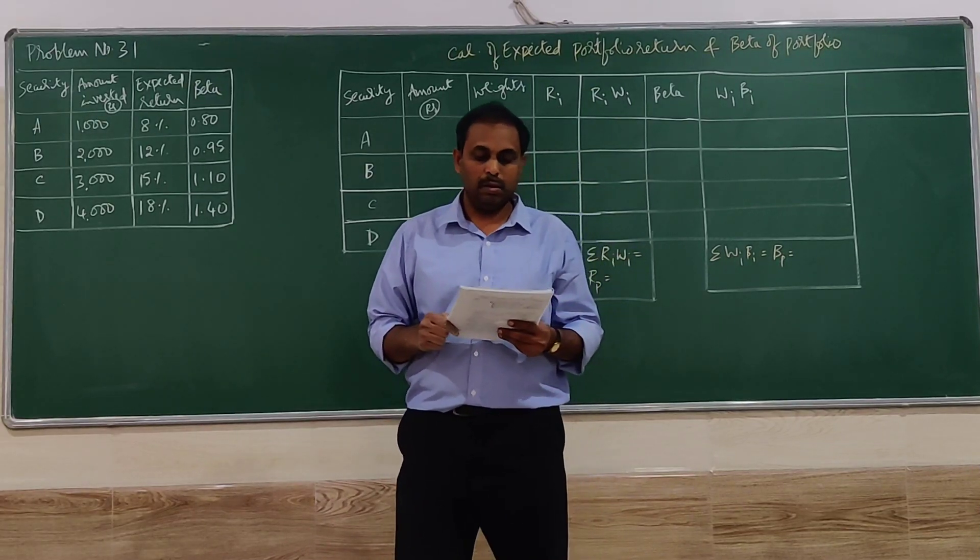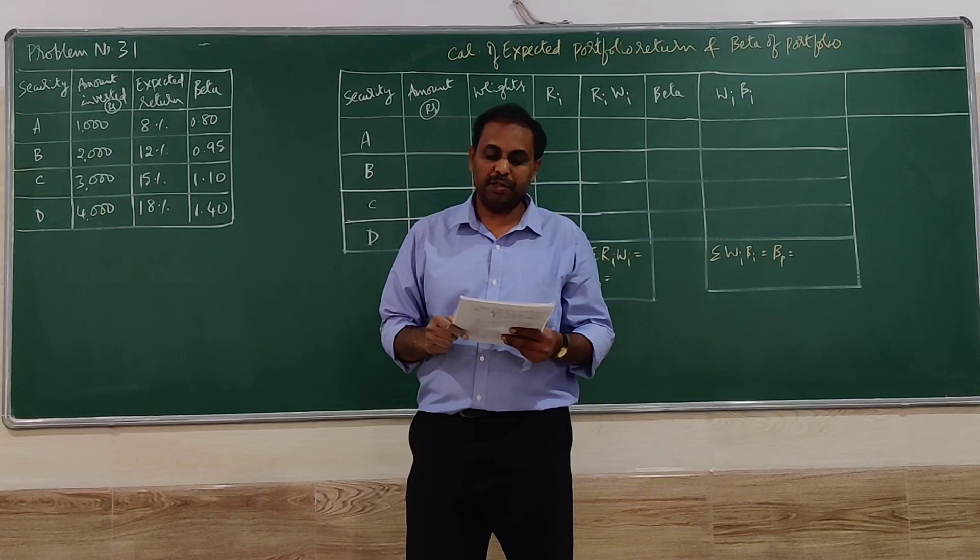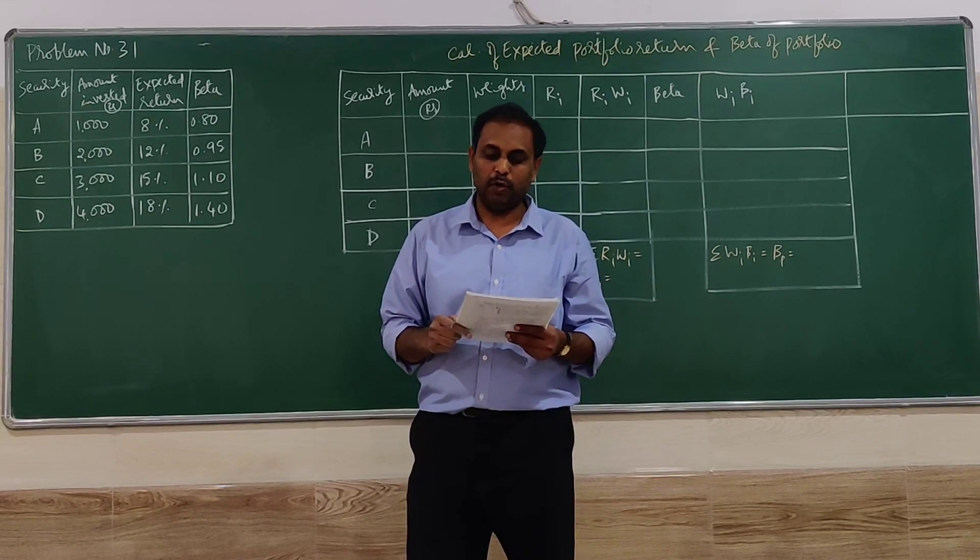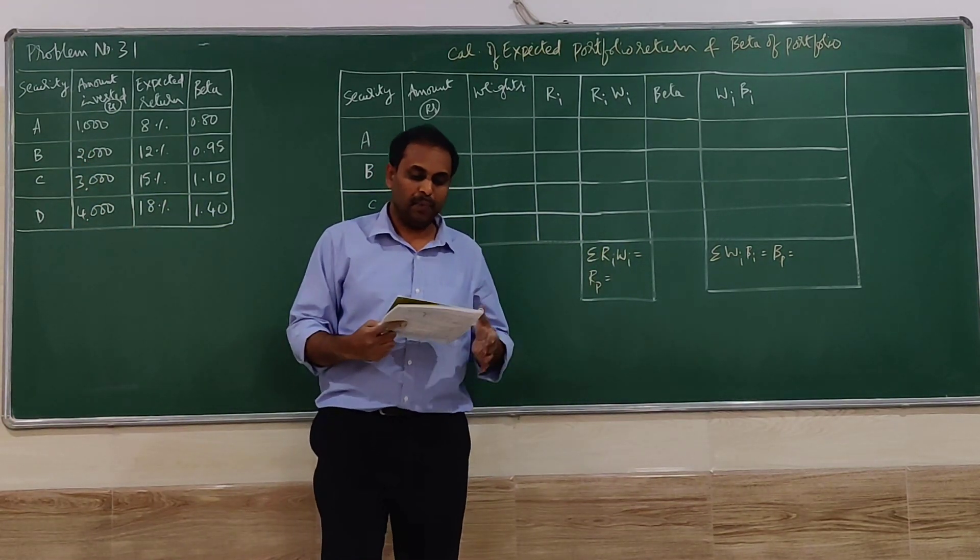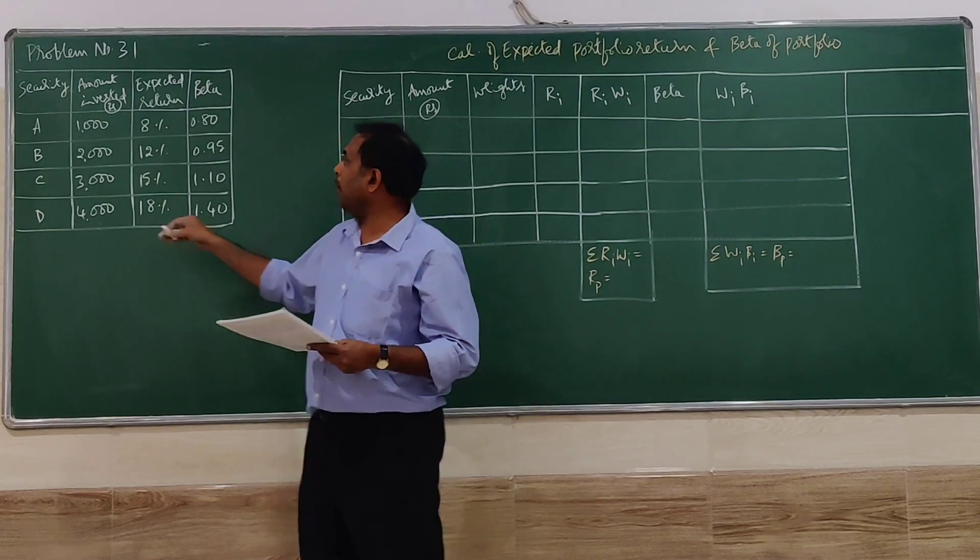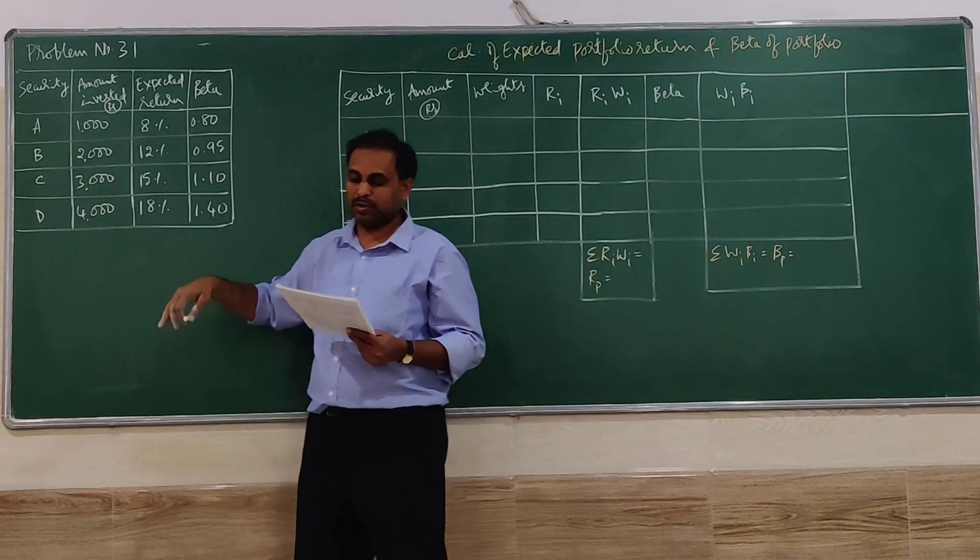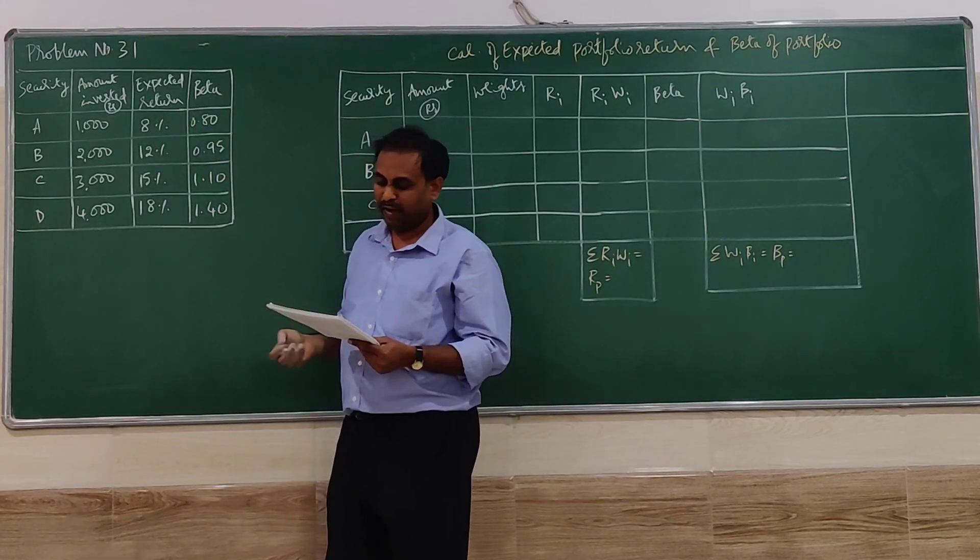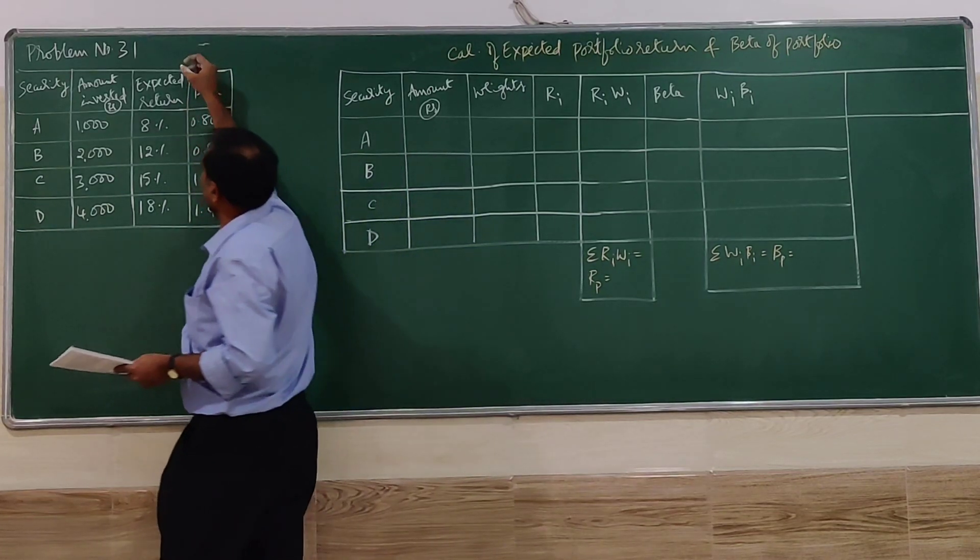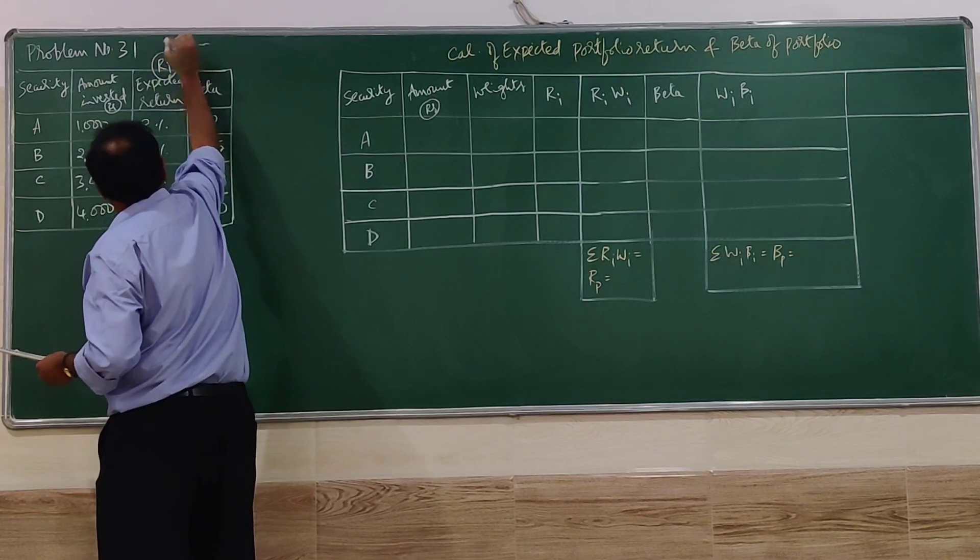The problem has the following information. The information pertaining to the portfolio consists of securities A, B, C, D. There are four securities given and the amounts are given in rupees: one thousand, two thousand, three thousand, four thousand. Expected return is given and the beta value is given. Expected return I can put it as ri, beta as b.